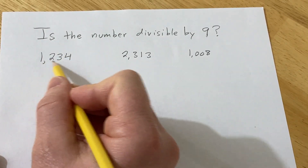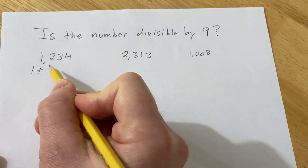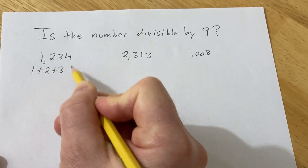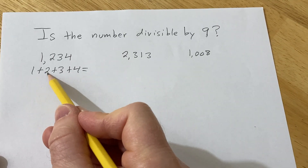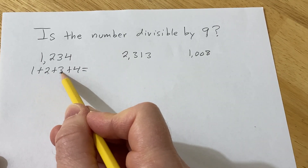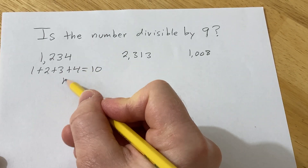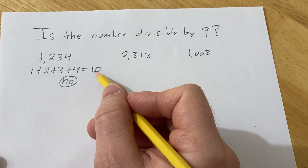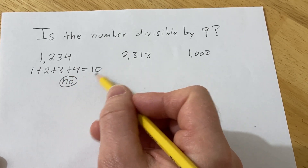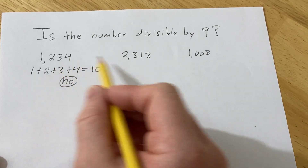For example, for this number here, the first step is to add the digits. So you do 1 plus 2 plus 3 plus 4. 1 plus 2 is 3, plus 3 is 6, and then plus 4 is 10. So 10 is not divisible by 9, so the answer is no. 9 does go into 10, but it doesn't go into it an even number of times — there's a remainder. So therefore this number is not divisible by 9.